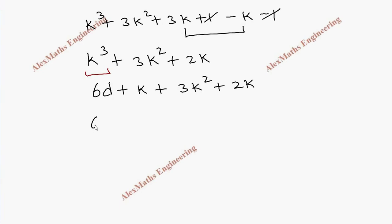So finally this is 6d then we have plus 3k² plus 3k. And once again this is 6d plus when 3 is taken common we get k² + k.